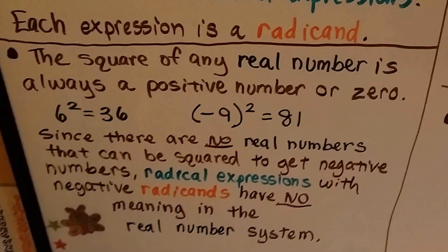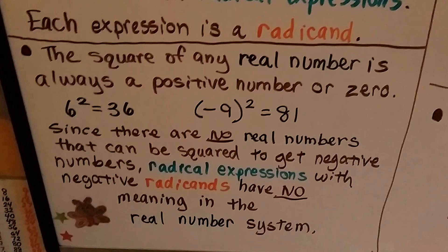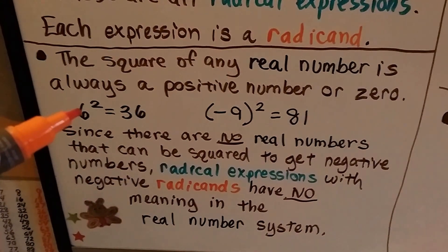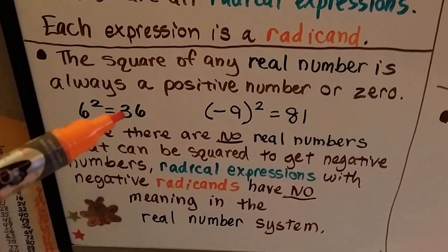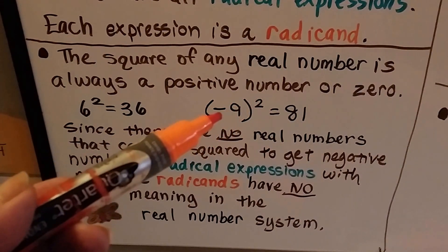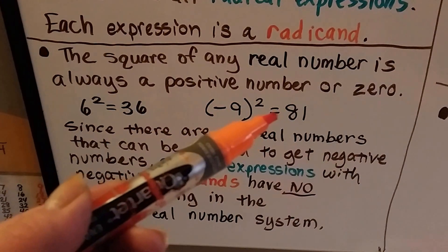We've talked about this before. The square of any real number is always a positive number or zero. We have a positive 6 times a positive 6. It's going to make a positive 36, isn't it? And even if we have a negative 9 squared, negative 9 times negative 9 makes a positive 81.